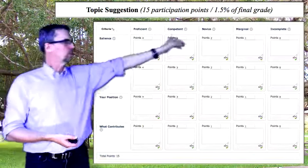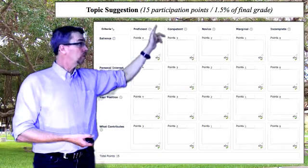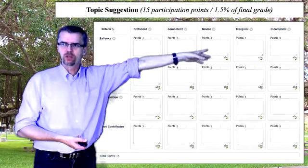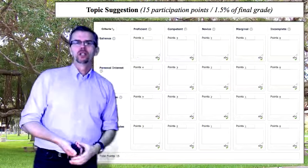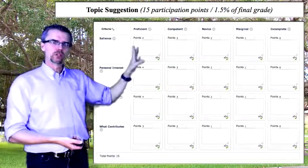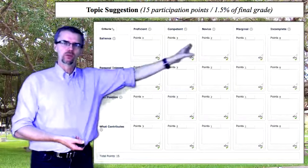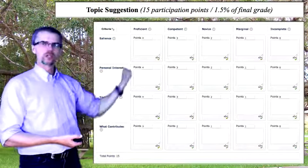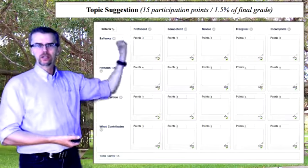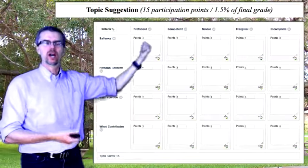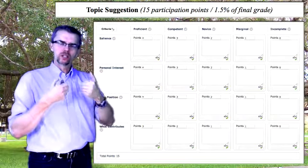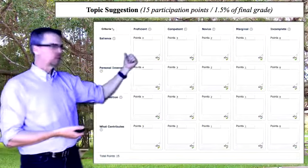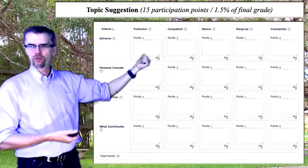The rubric columns are labeled Proficient, Competent, Novice, Marginal, and Incomplete — so typically 4, 3, 2, 1, and 0 on each quality. The qualities I'm looking for are: the salience of the topic — how relevant is it, what makes it so important that people will read the whole article — and your personal interest in the topic, worth 4 points.